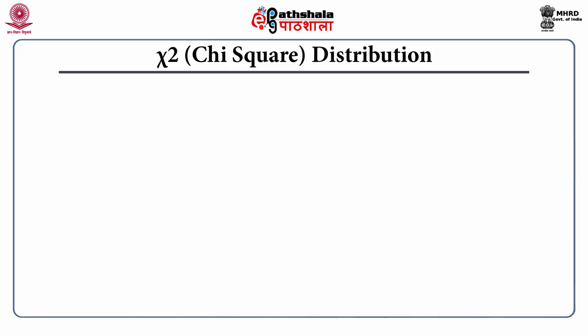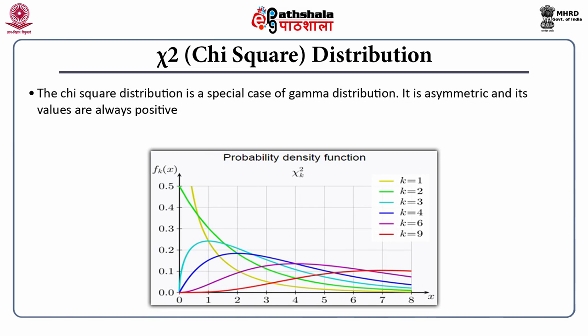Let us start with what the chi-square distribution is all about. As you can see in this slide, the chi-square is a special case of gamma distribution, where the shape parameter is of extreme importance. As the kappa parameter — that is basically your degree of freedom — increases, the chi-square distribution changes its shape.